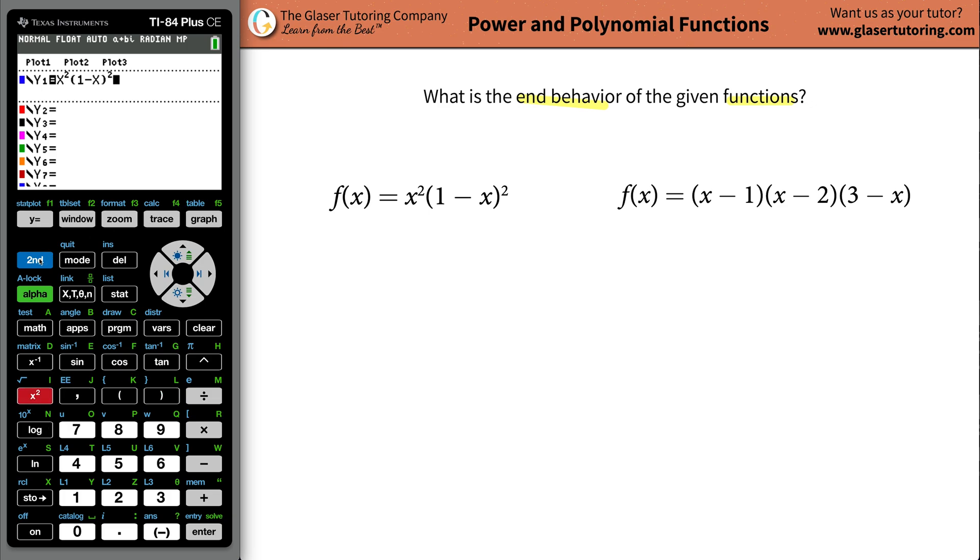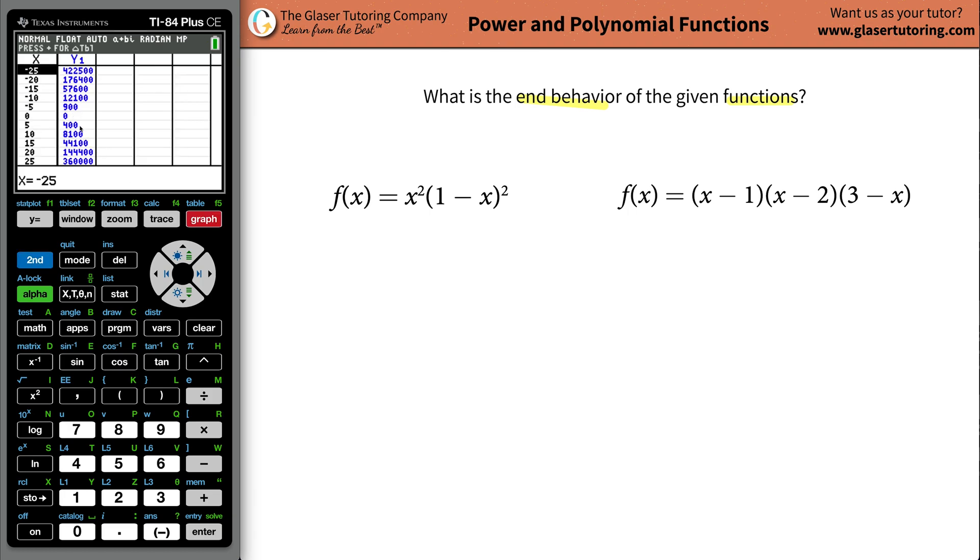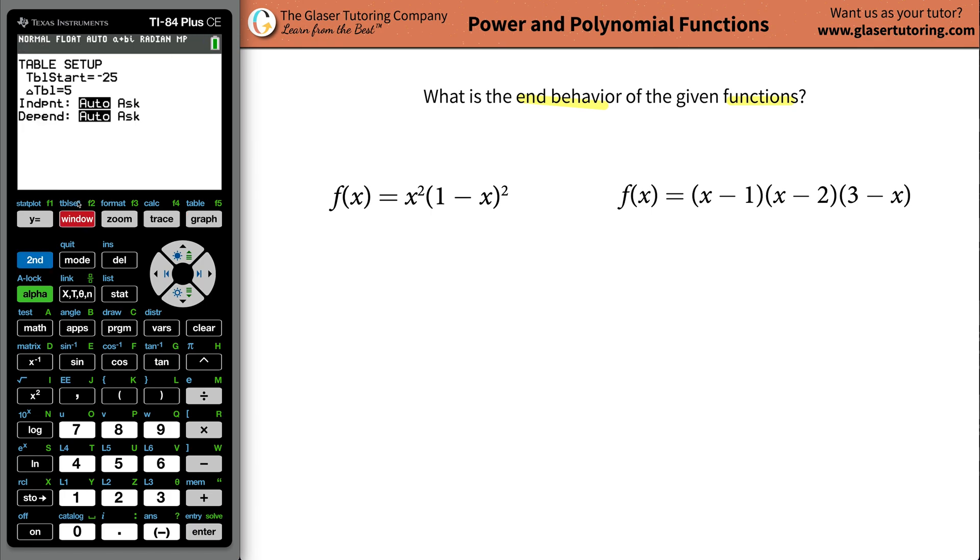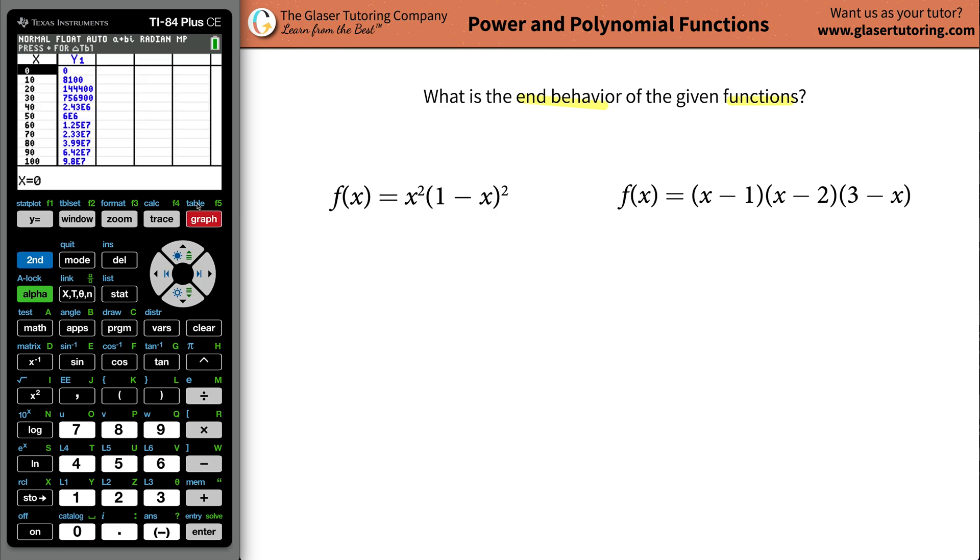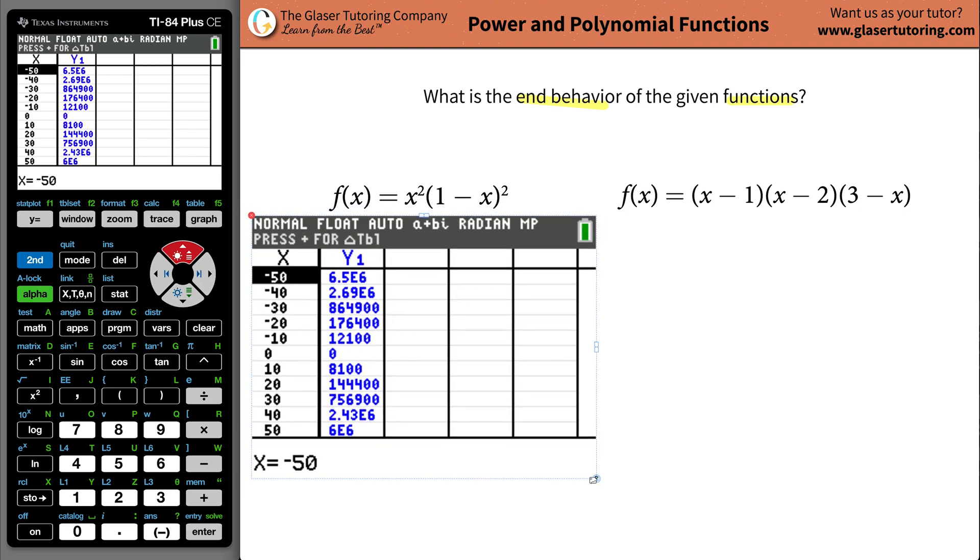Now what you can do is go to your table. Hit second table and you should get a readout. Now your table might not look identical to what I have here. So if you want, just hit second window that brings you to the table set. You can start your table at zero and then you can increment your table however you like. Go up by five units, 10 units. Why don't we do 10 in this particular case? So then hit second graph again. That brings up the table and we'll scroll up a little bit so we get an equal picture. So here's the table.